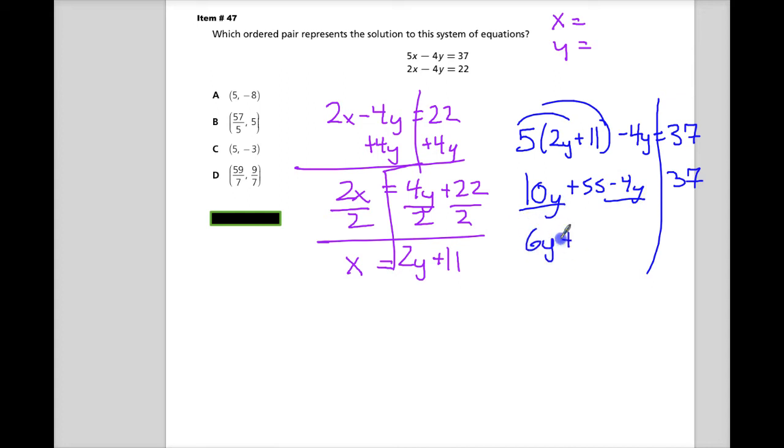I need to do my distributive property there. There are my like terms. 10 minus 4 is 6. So I need to subtract 55. Those cancel out. So this is negative 18. And then 6y divided by 6.